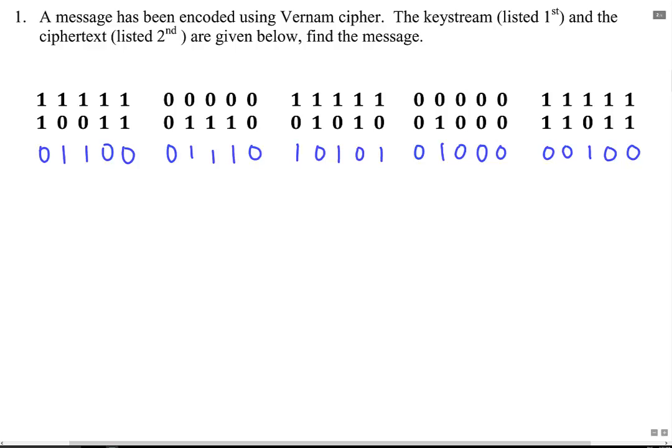So once again, I went through each column and I added in mod 2. If the numbers were the same, I got a 0. Otherwise, I get a 1.